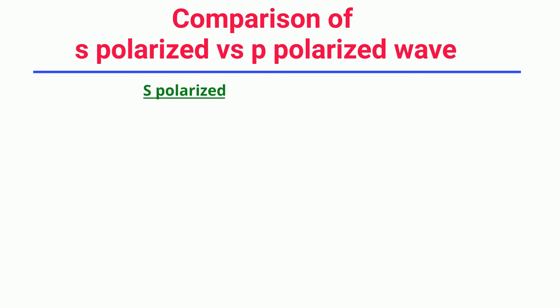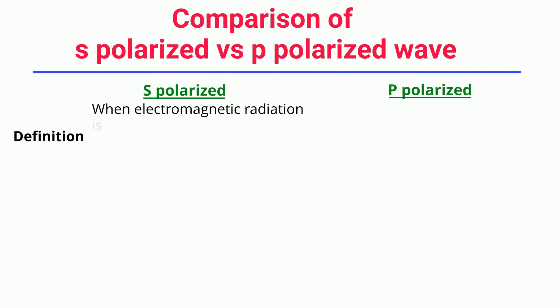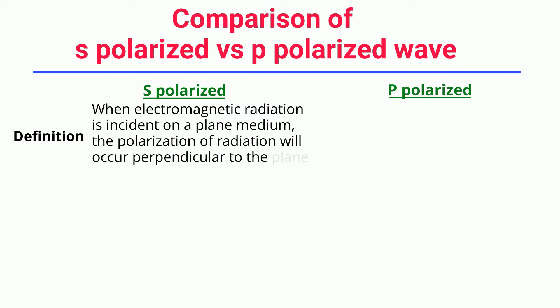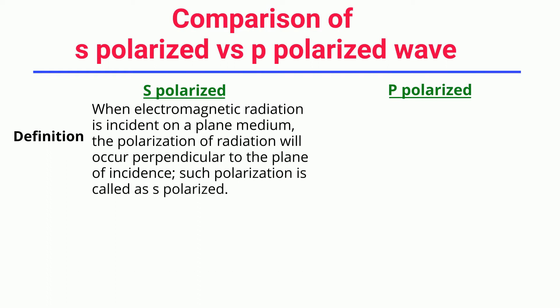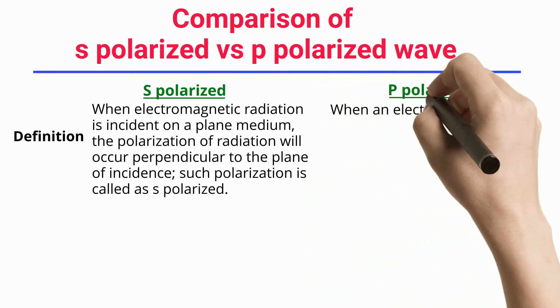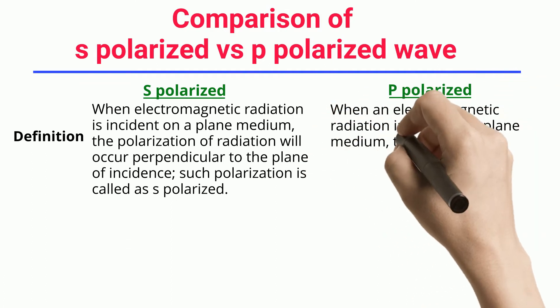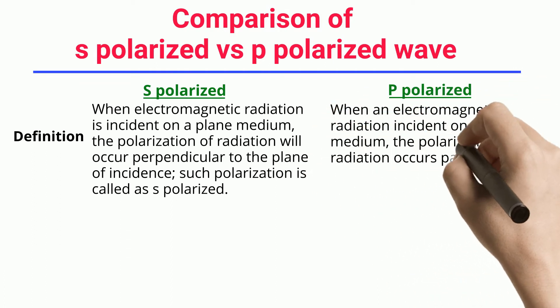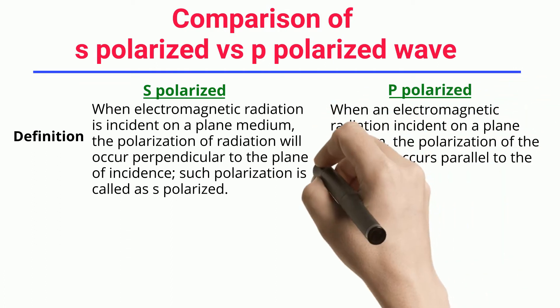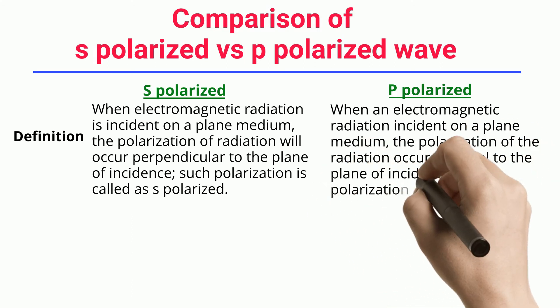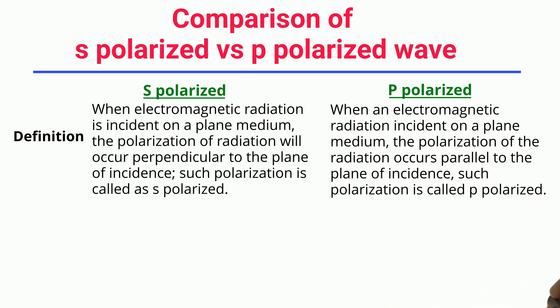Definition: When electromagnetic radiation is incident on a plane medium, the polarization of radiation will occur perpendicular to the plane of incidence — such polarization is called S-Polarized. When electromagnetic radiation is incident on a plane medium and the polarization occurs parallel to the plane of incidence, such polarization is called P-Polarized.